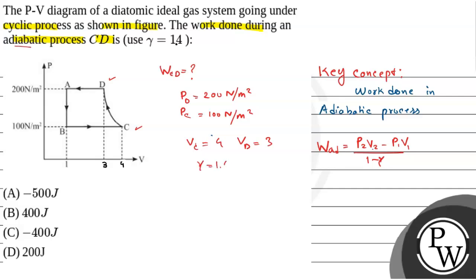Gamma value given, that is 1.4. Come on, simply we calculate. That is work done from C is what? PD VD minus PC VC by 1 minus gamma. Path concept, that is C to D.